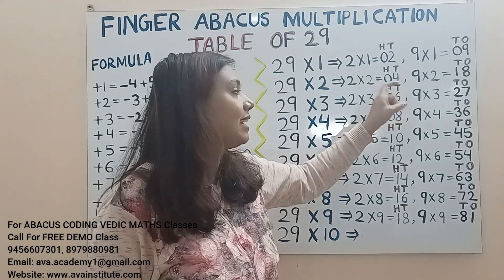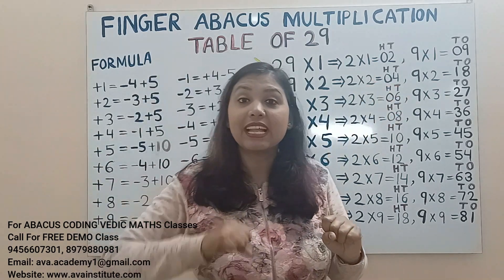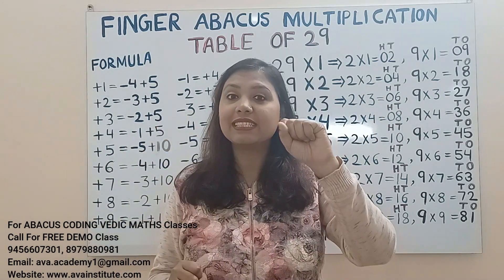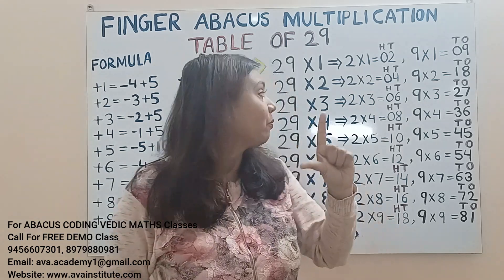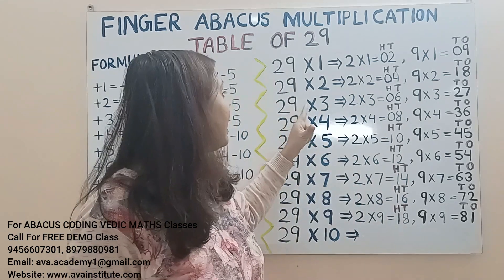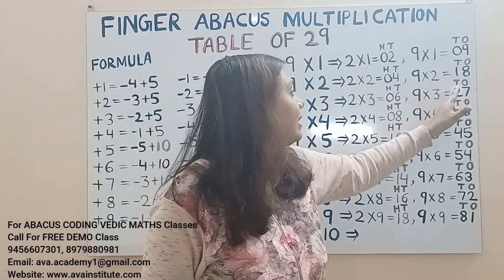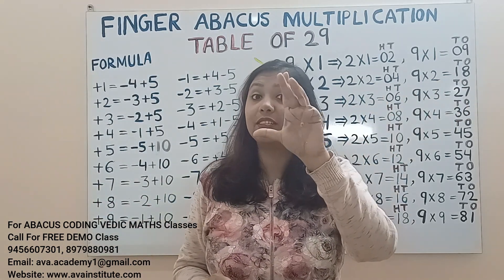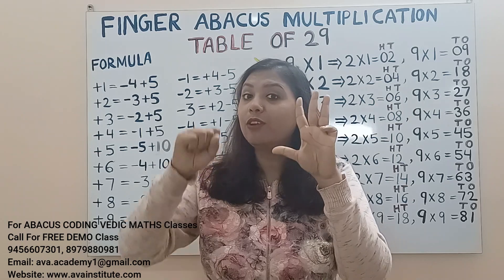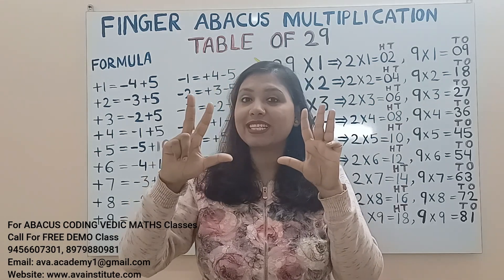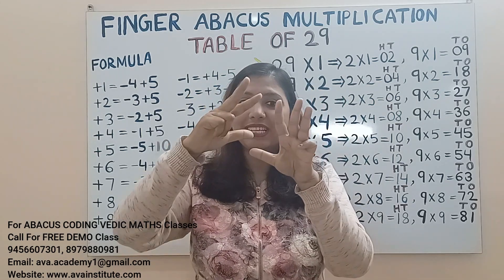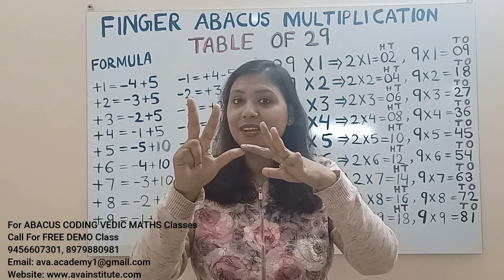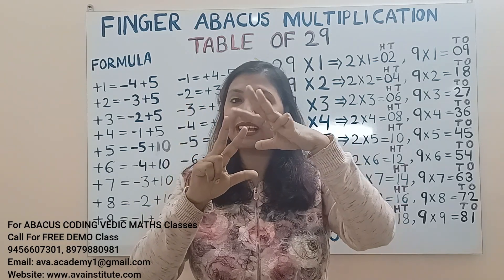Next, 29 threes. 2 threes are 6 — represent 0 in tens and 6 in hundreds. 9 threes are 27 — represent 20 in tens and 7 in ones. So the answer is 50, 60, 70, 80... 5, 6, 7 — 87 is the answer.